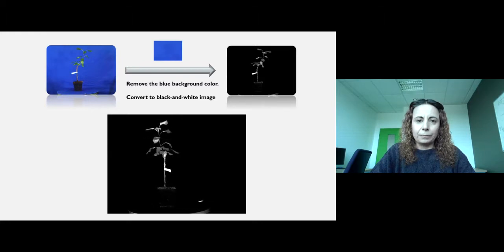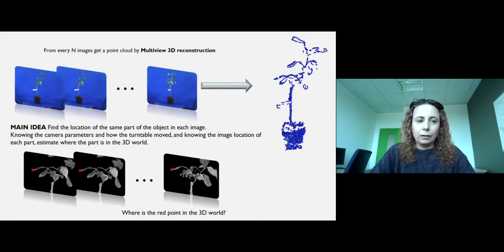From every N images, we get a point cloud using multi-view 3D reconstruction techniques. This multi-view 3D reconstruction is based on finding the location of the same parts of the object in each image.